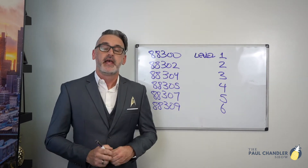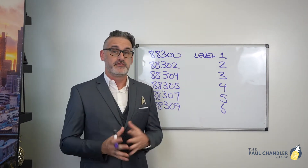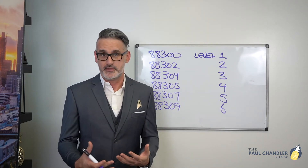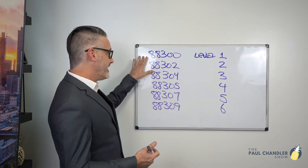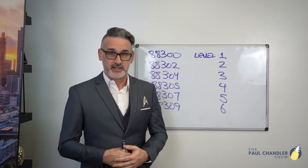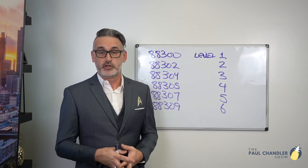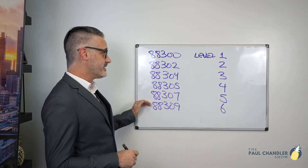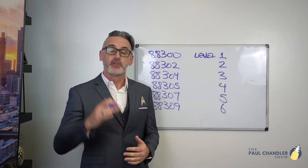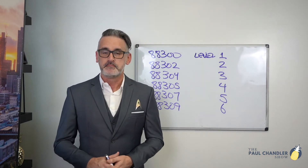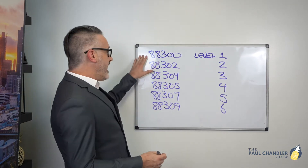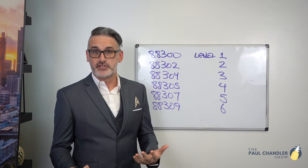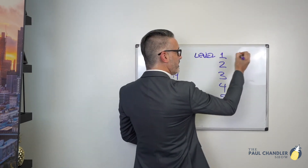With surgical pathology we have two different options: microscopic examination and gross examination. If we look at 88300, level 1, there are no drop-downs underneath and no body locations listed. But 88302 through 88309 — levels 2 through 6 — do have many different body locations listed. That's because level 1 is just gross examination only.